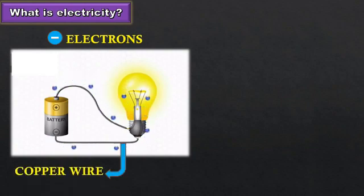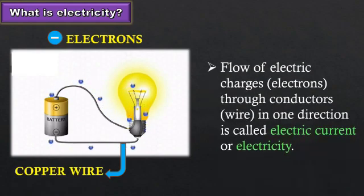These wires are made up of metal, usually copper or aluminum. Hence we simply say that the flow of electric charges, that is electrons, through conductors, that is wire, in one direction is called electric current or electricity.